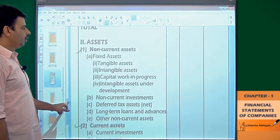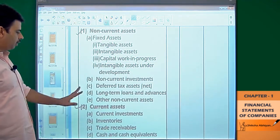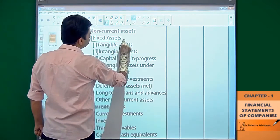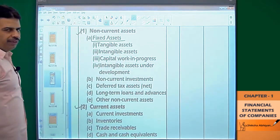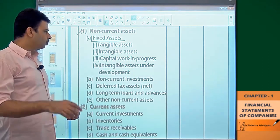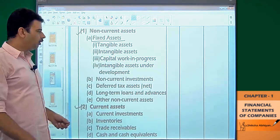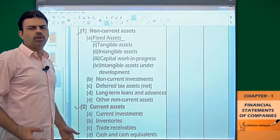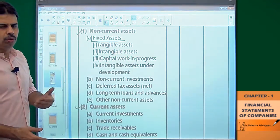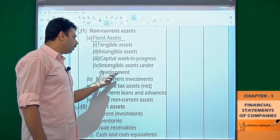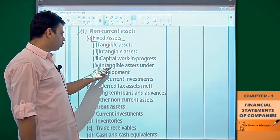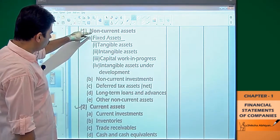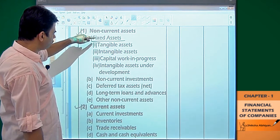Similarly, for non-current assets and current assets: first we have fixed assets. Under fixed assets — tangible assets, which we can see and touch; intangible assets, like goodwill; capital work in progress; and intangible assets under development — for example, if a formula or know-how is being developed but is not yet complete and ready for production, it is classified as intangible assets under development. This is part of fixed assets under non-current assets.